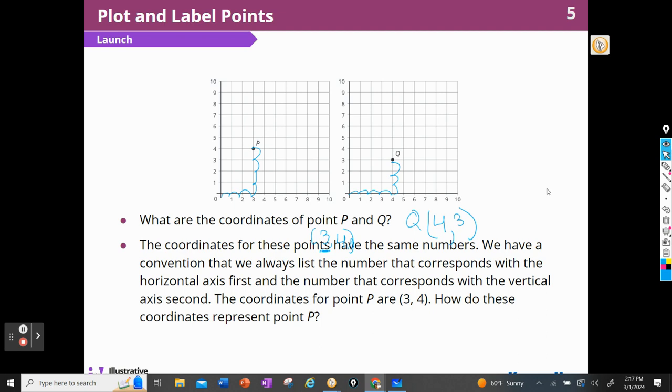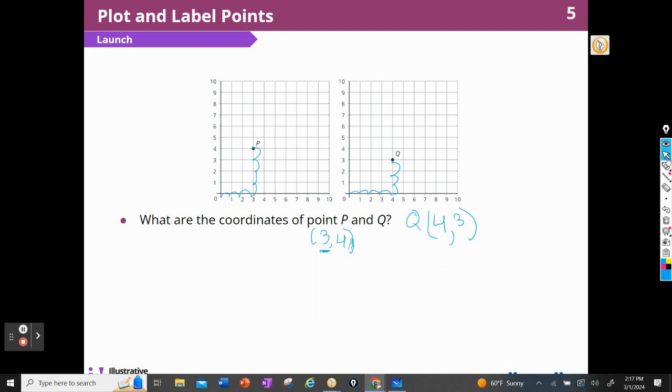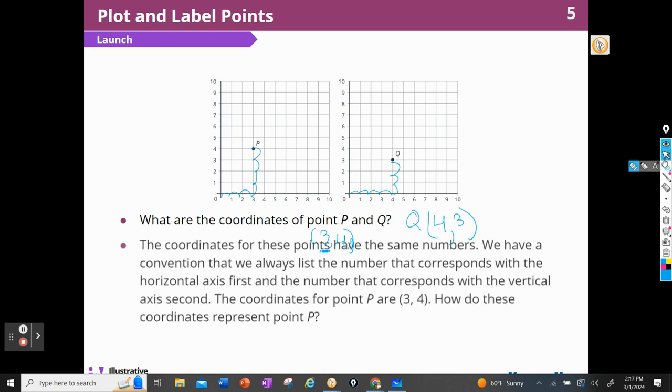The coordinates for these points have the same numbers. We have a convention that we always list the number that corresponds to the horizontal axis first, and then the number that corresponds with the vertical axis second. So for P, 3, 4, which is, remember, we had to go over first and then up, over first and then up. And that's how we got 3, 4. How did these represent 3, 4? Well, we went over 3, horizontal axis, and then up to 4.